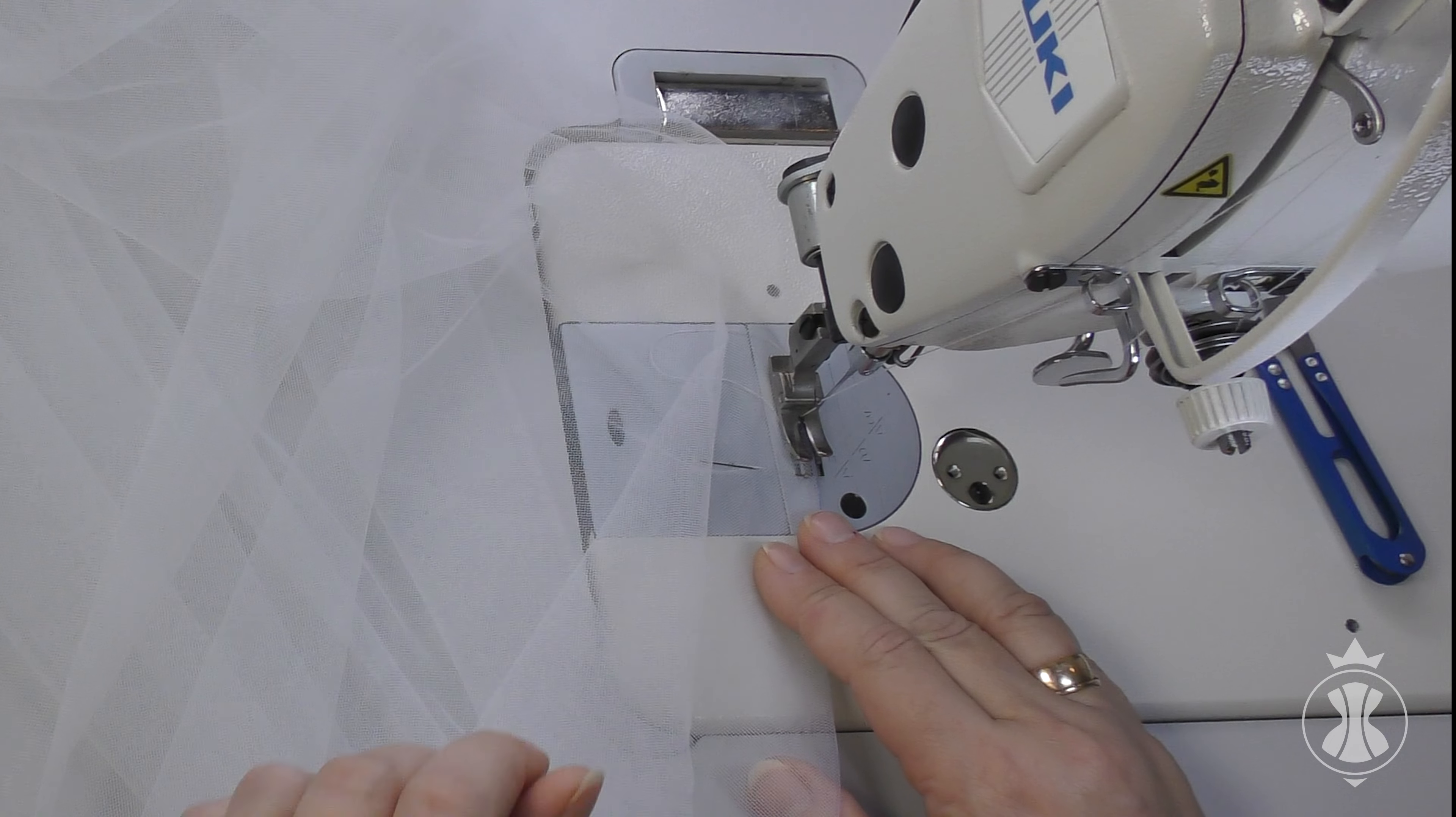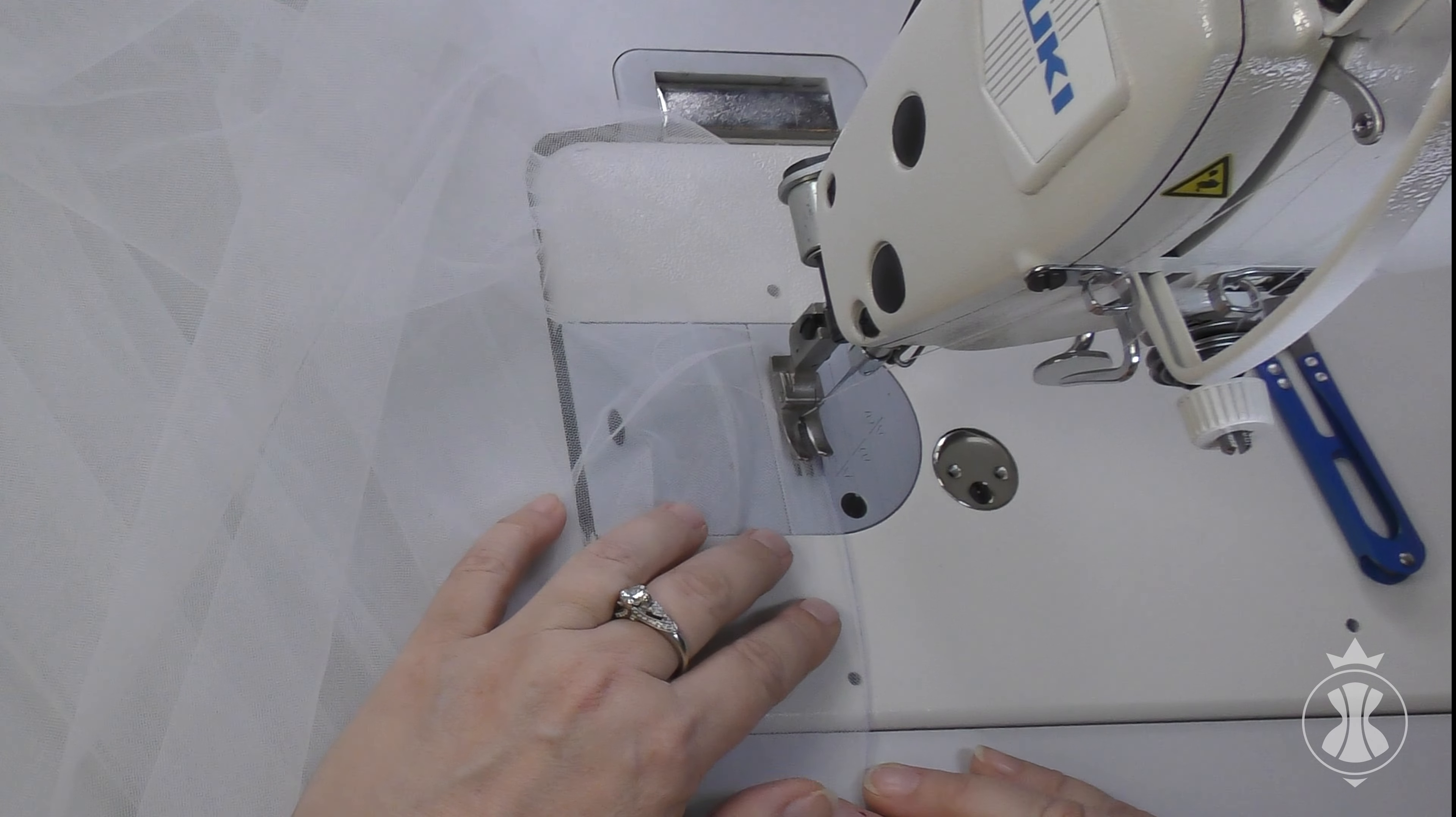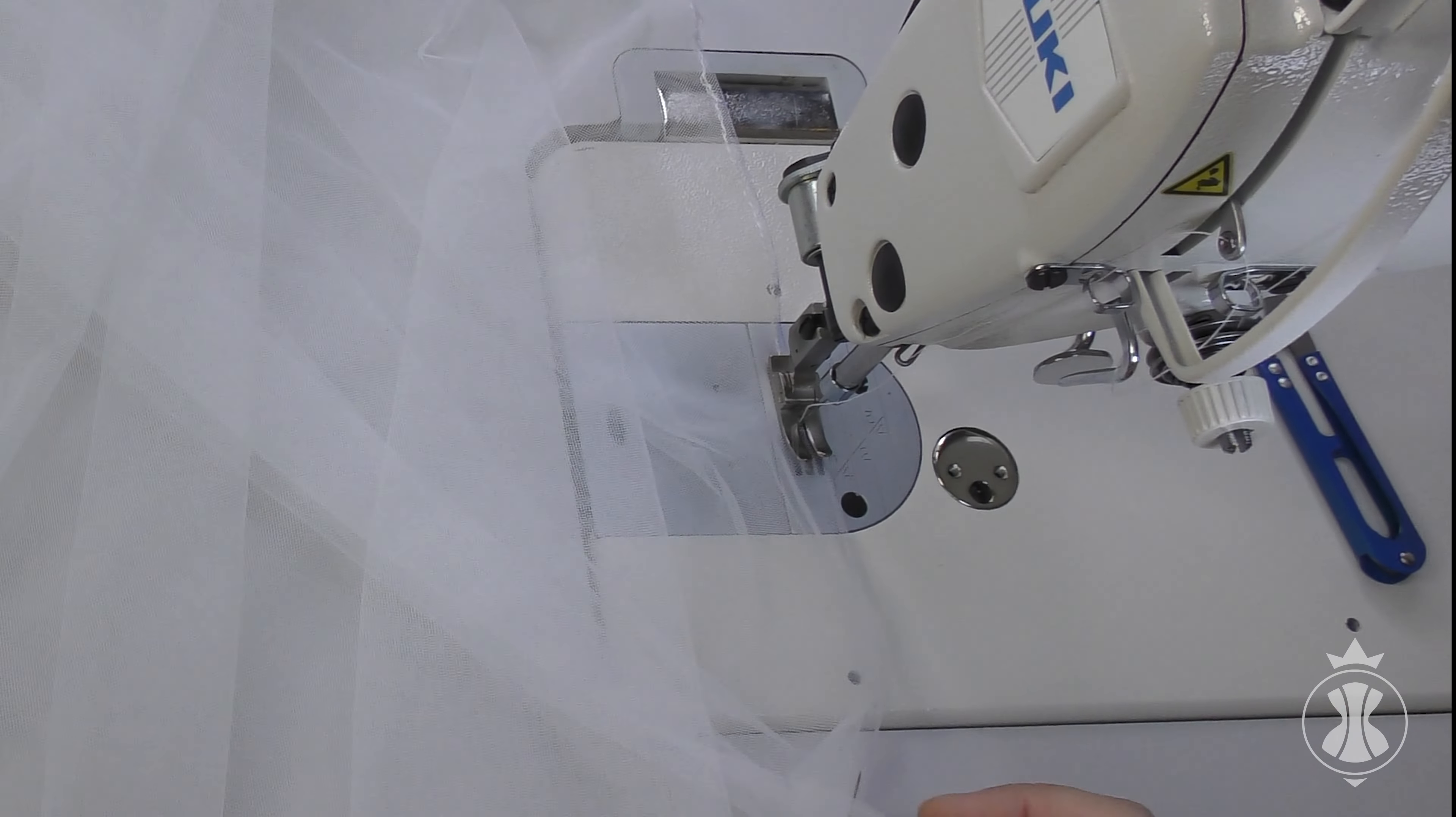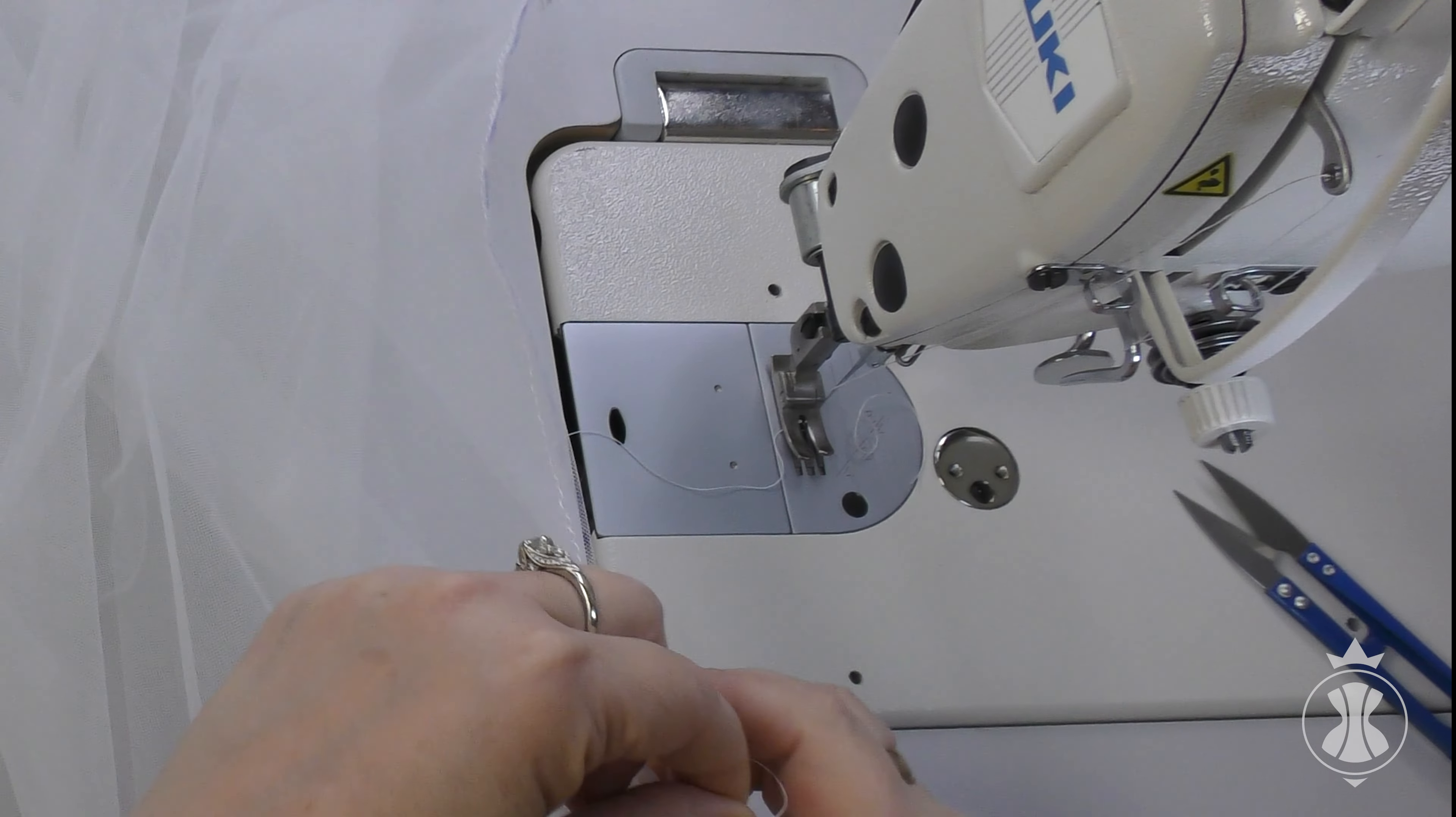Sew a double machine stitch along the marked line. Set the machine stitch length to the maximum to make it easier to gather the fabric on the thread later. I will sew the first stitch along the fold and the second parallel stitch at the width of the presser foot. Leave thread ends on both sides of the stitched line for gathering.